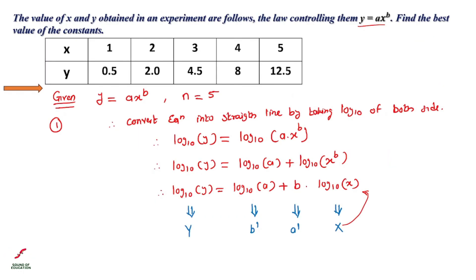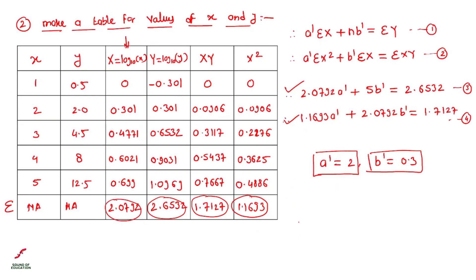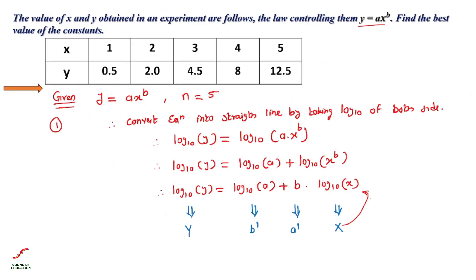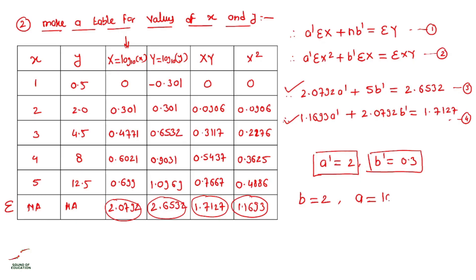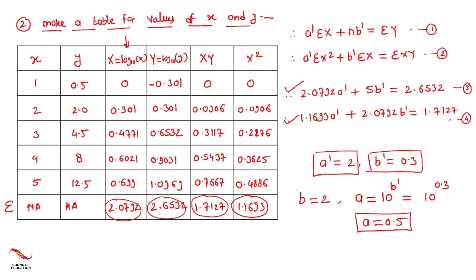Using the relations defined earlier: A-dash = b, so b is equal to 2. For A, we use B-dash = log₁₀(a), so a = 10^(B-dash) = 10^0.3, which gives a = 0.5.